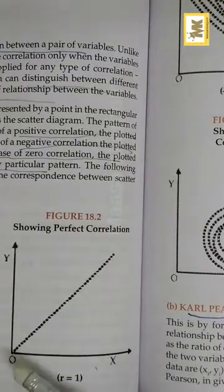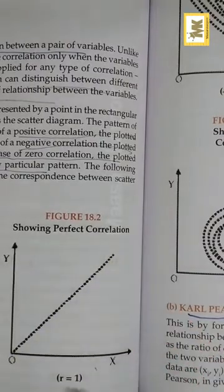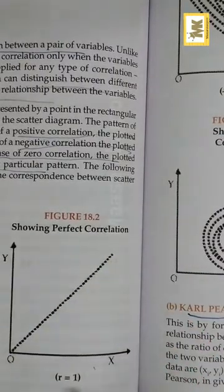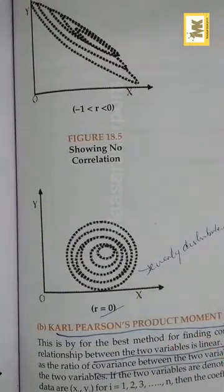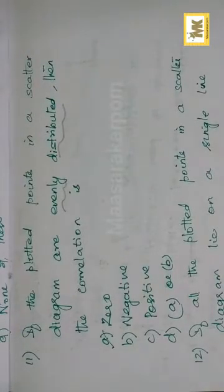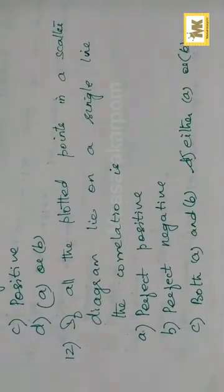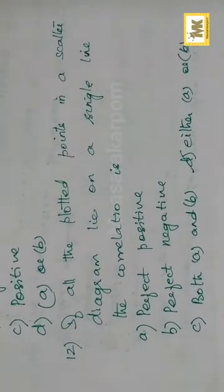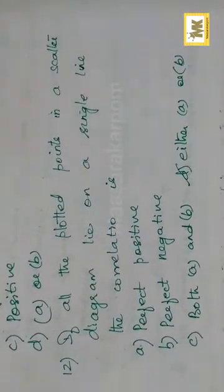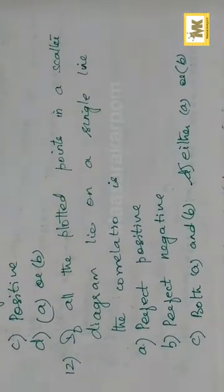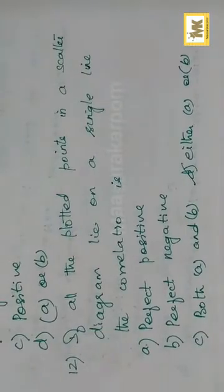Lower left to upper right — r is equal to positive 1. And r is equal to 0 if the points are evenly distributed. If all the plotted points in a scatter diagram lie in a single line, the correlation may be positive or negative — it is perfect positive or perfect negative.